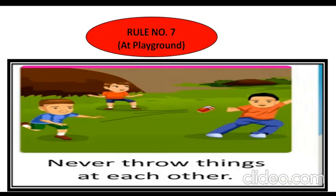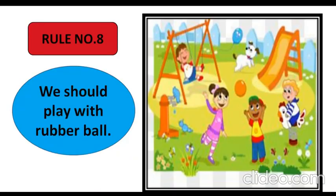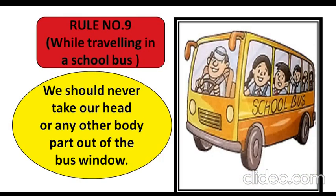Rule number seven: jab hum playground mein khelte hain, tab humein kaun sa rule yaad rakhna chahiye? Never throw things at each other. Humein ek doosre ke upar cheezein nahi phenkni chahiye. Rule number eight: we should play with a rubber ball. Rule number nine: while traveling in a school bus, we should never take our head or any other body part out of the bus window — jaise arm, head — inko bilkul bhi nahi nikaalana chahiye.